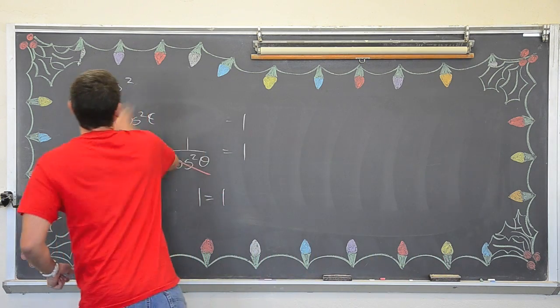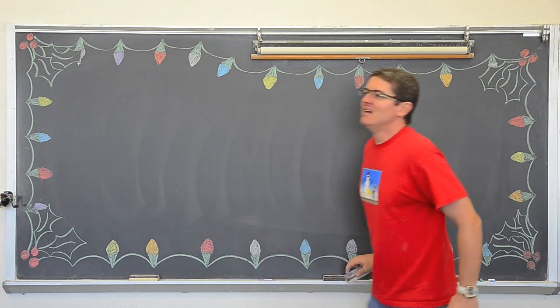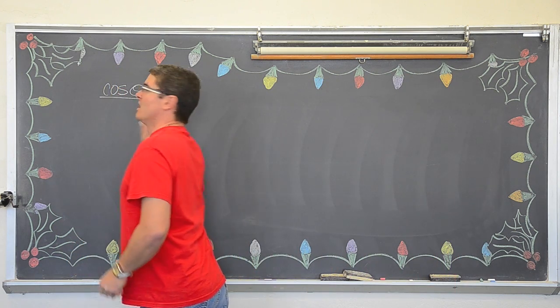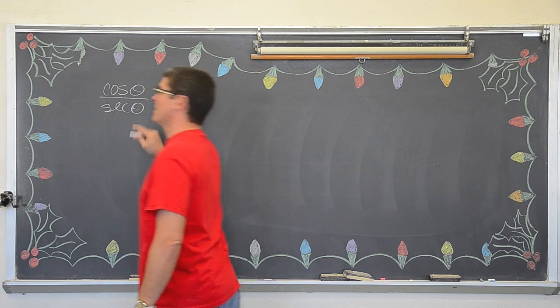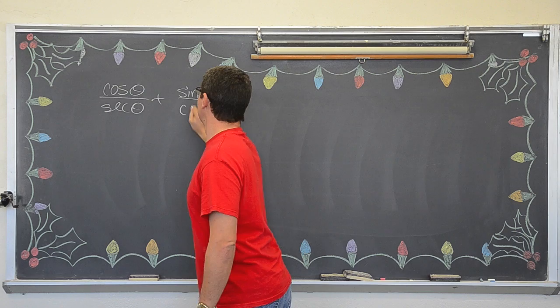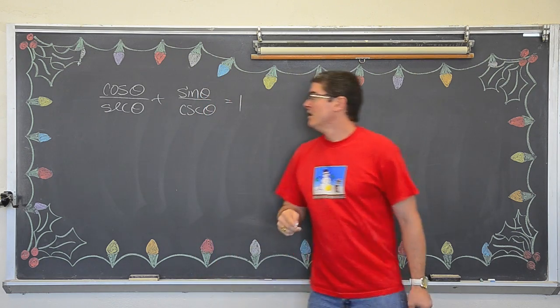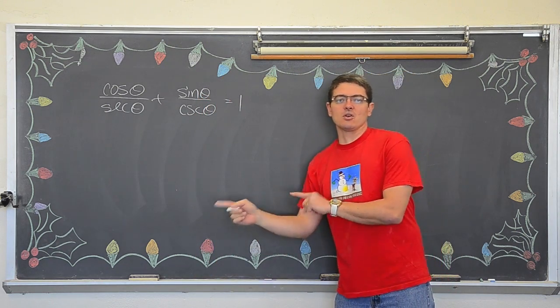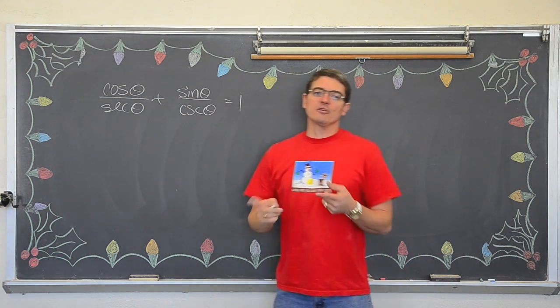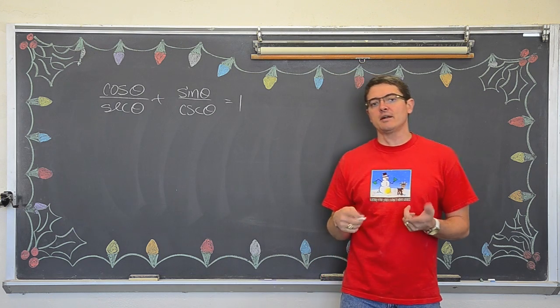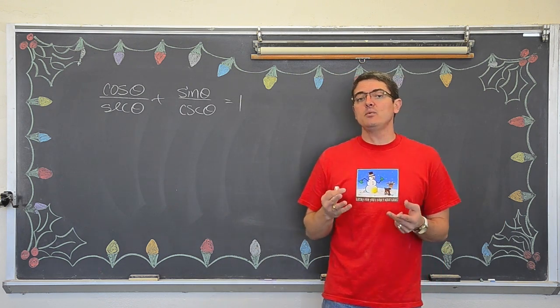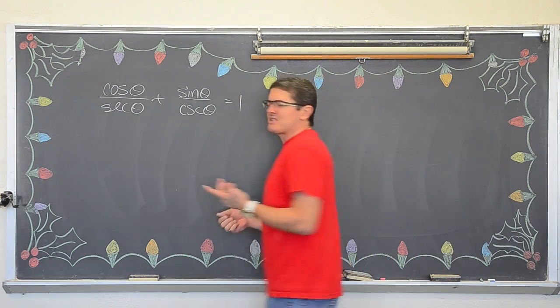Alright! So, I am getting excited because I love these problems. Let's take a look at cosine theta over secant theta plus sine theta over cosecant theta equals one. Now, on the left side I have two terms. On the right side I have one. A lot of times when you have a different number of terms on each side of the identity, you are going to want to find common denominators and add those two terms together and see what happens. Indeed, we can do this.